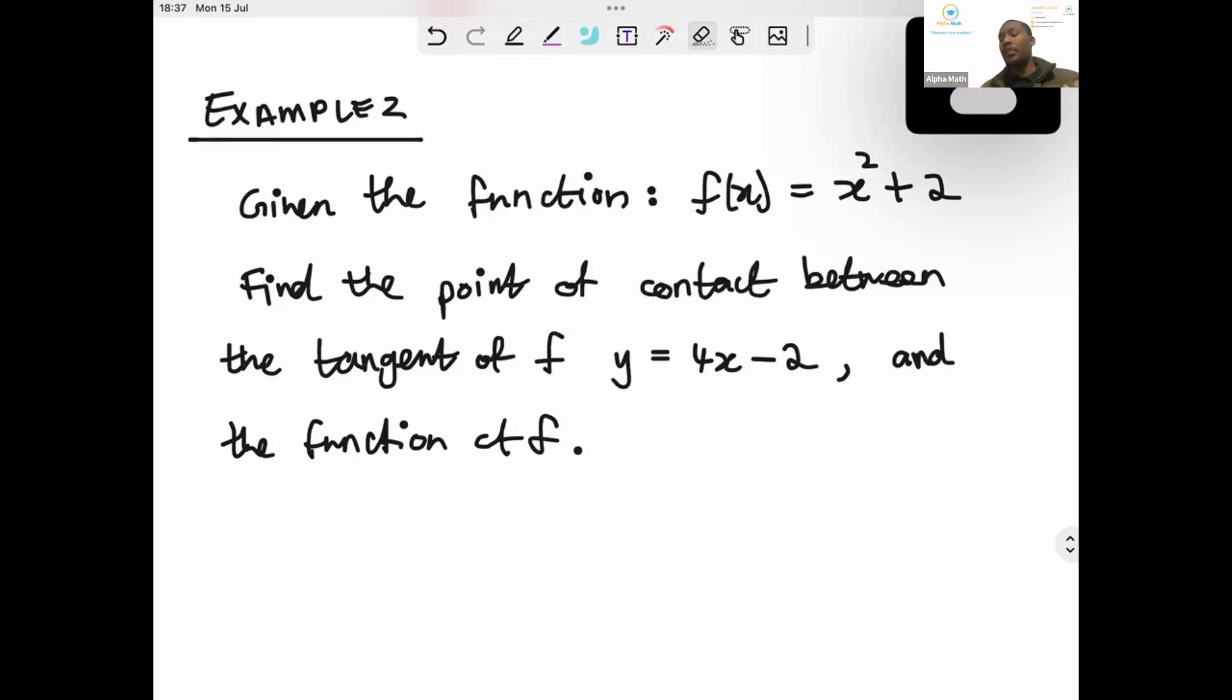So what's happening here is you have a function f(x), which is x squared plus 2. That's the parabola. And then there's a tangent to this function, having the equation y equal to 4x minus 2.